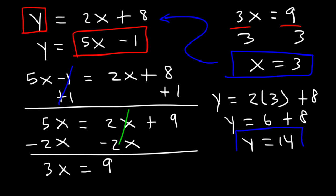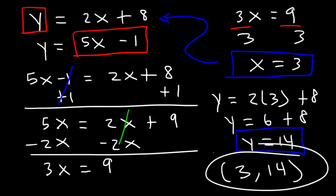So if you want to write your solution as an ordered pair, you can write it like this: it's going to be 3 comma 14. And that's the answer.